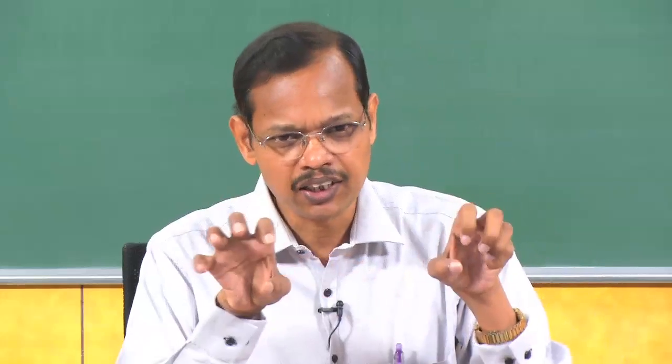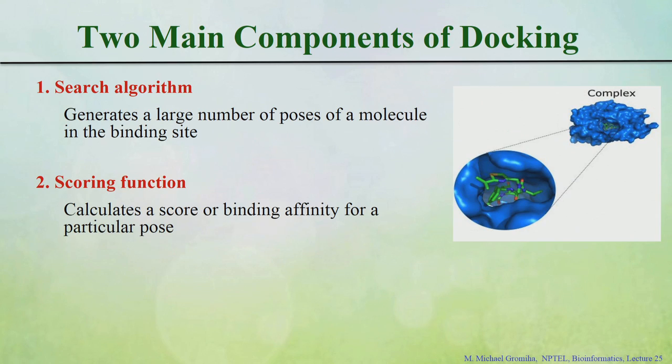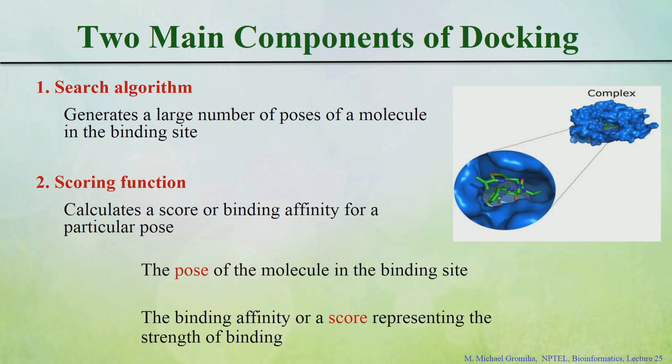When you dock, for example, if you have a protein and the ligand, what are the various aspects we need to think? There are two different aspects - these are the major limitations. One is the search algorithm: it will find the search poses, because the protein can form a large number of poses. The second aspect is the scoring function: when your ligand interacts with your protein, how to quantify that ligand 1 interacts better than ligand 2. We need a scoring function to decide the binding affinity between the protein and the ligand - one is the pose and the second is the score, which gives you the strength of the binding.